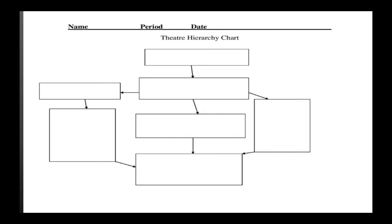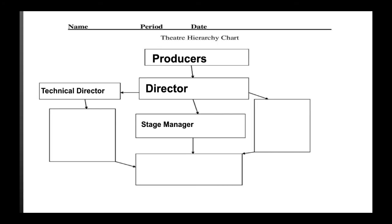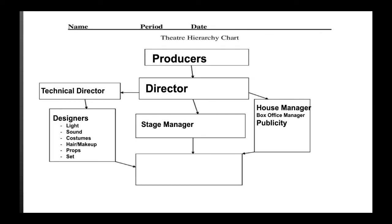This is a basic hierarchy chart. At the top we have our producers. Under them, the director. At roughly the same level, but not exactly, we have our technical director. Then the stage manager. We have our house manager, box office manager, and publicity manager — they report not only to the stage manager during shows but also to the director. Then we have all of our designers. And at the very bottom are our technical crew and our actors. Remember, just because they're at the bottom doesn't mean they're not important — we need all these people to create a successful performance.